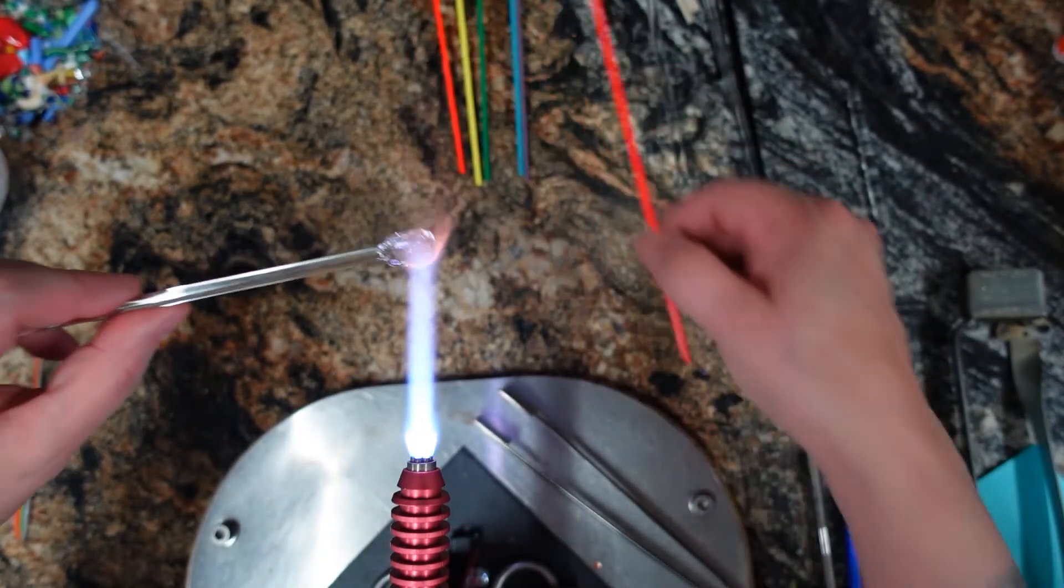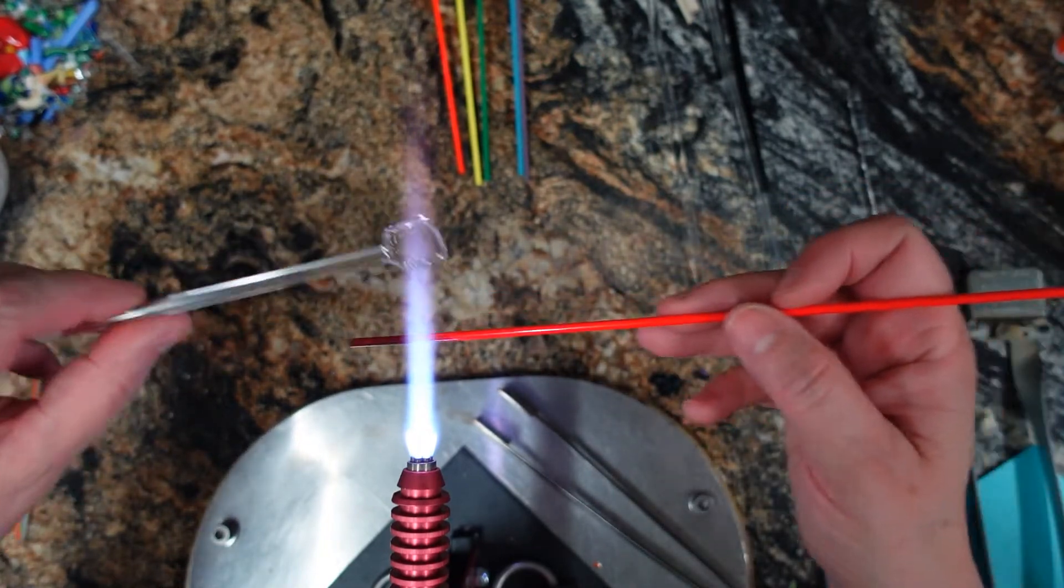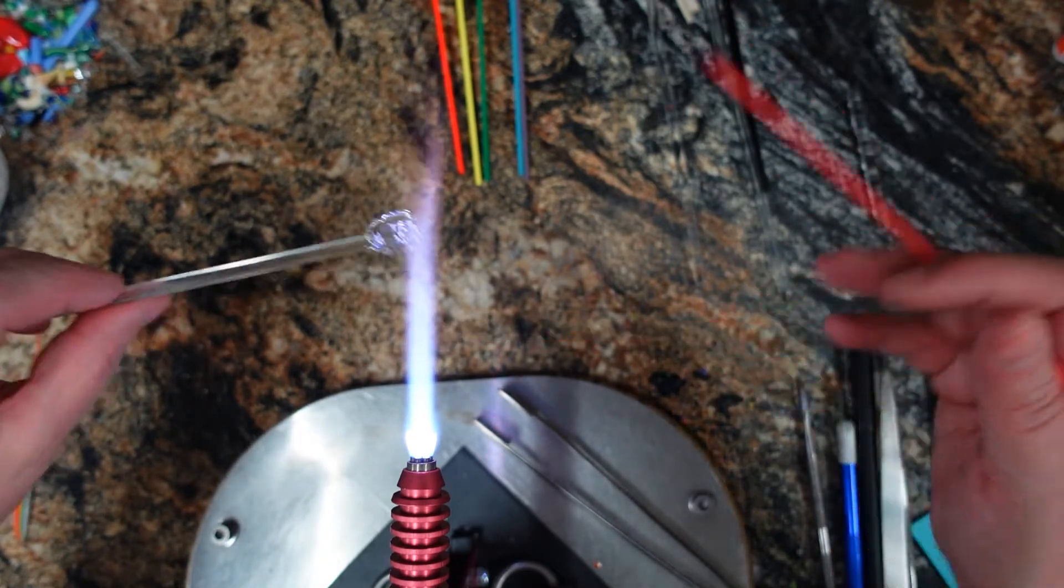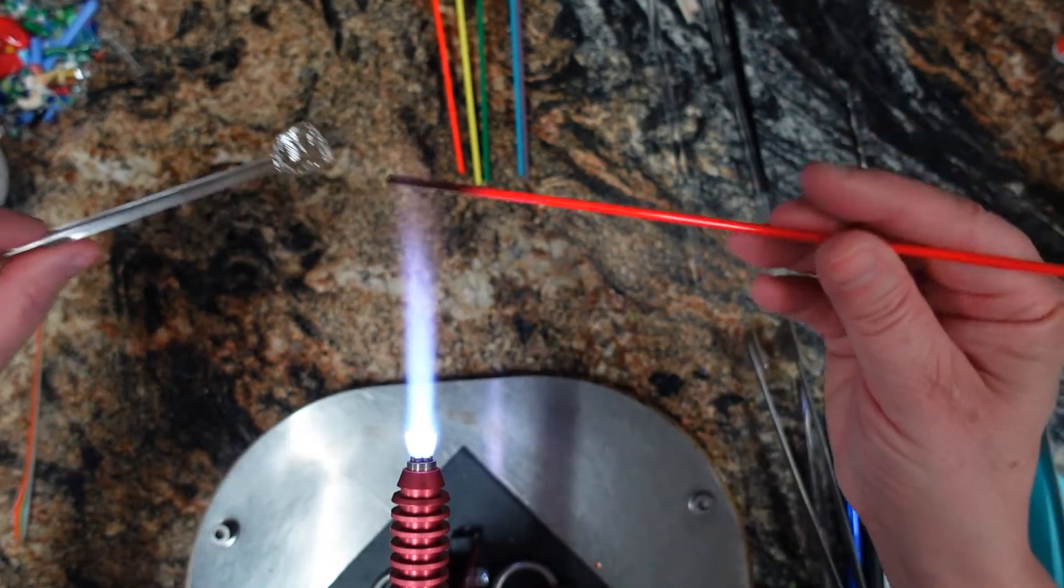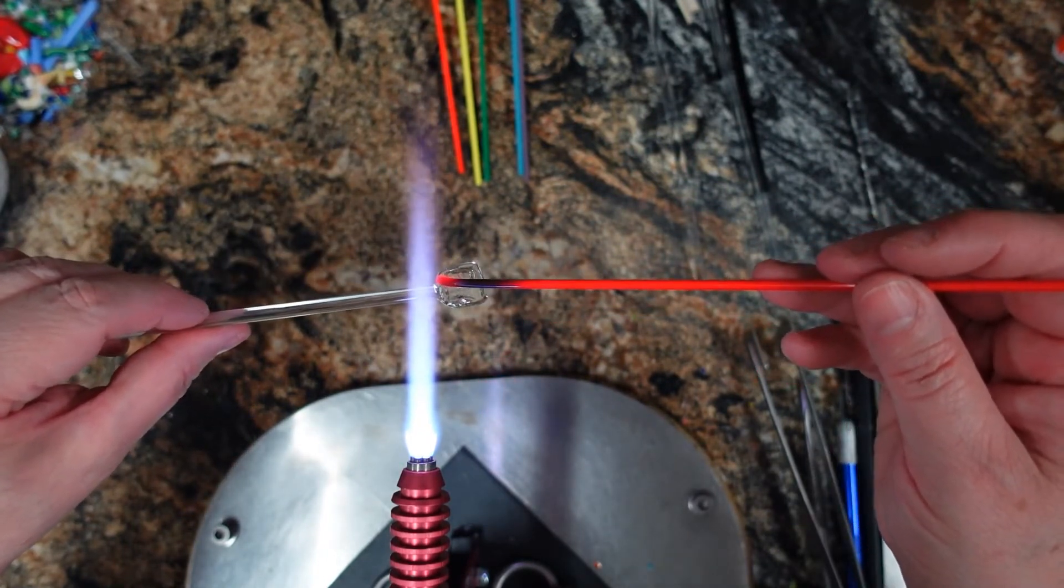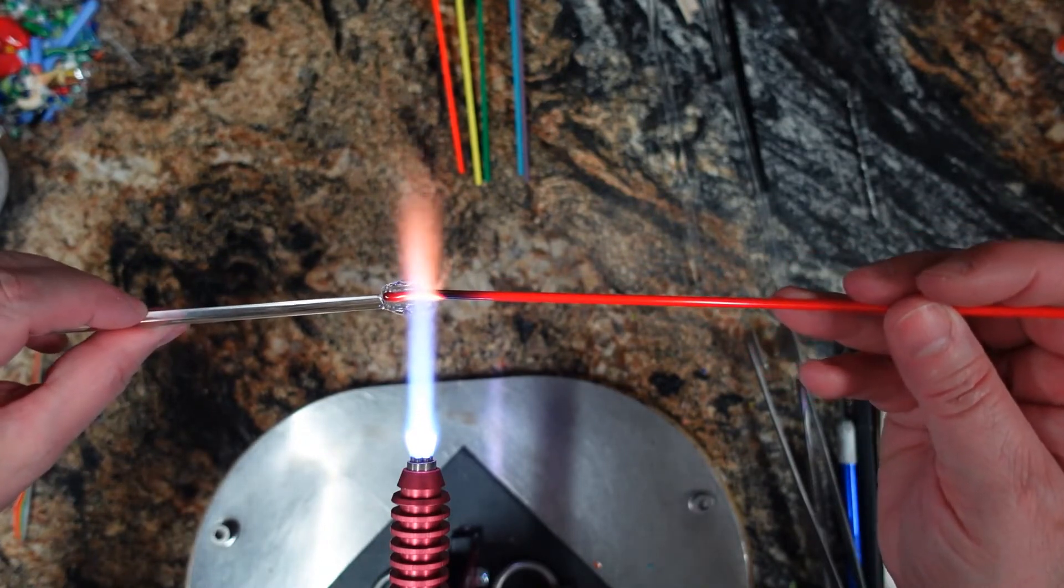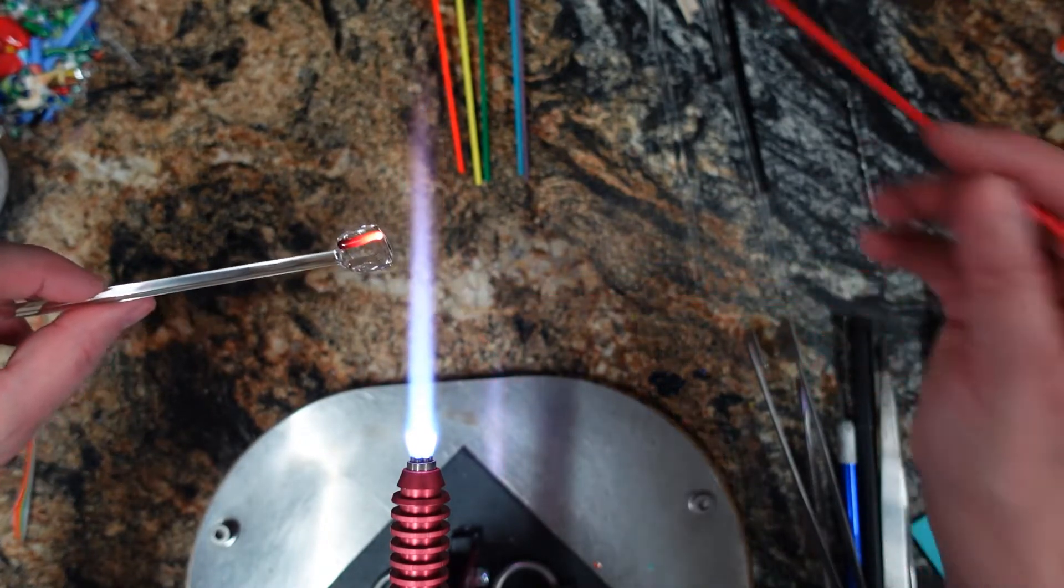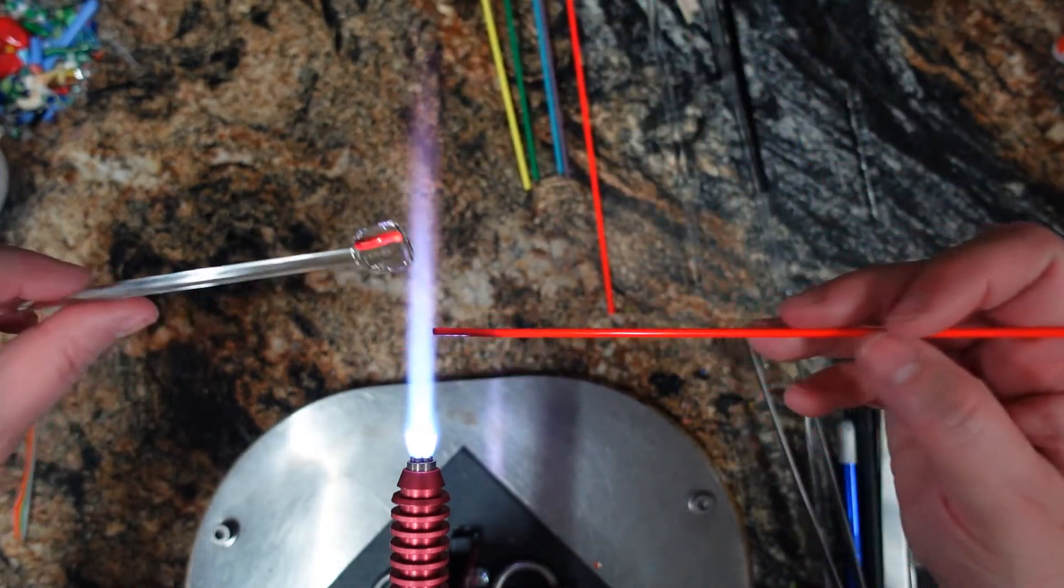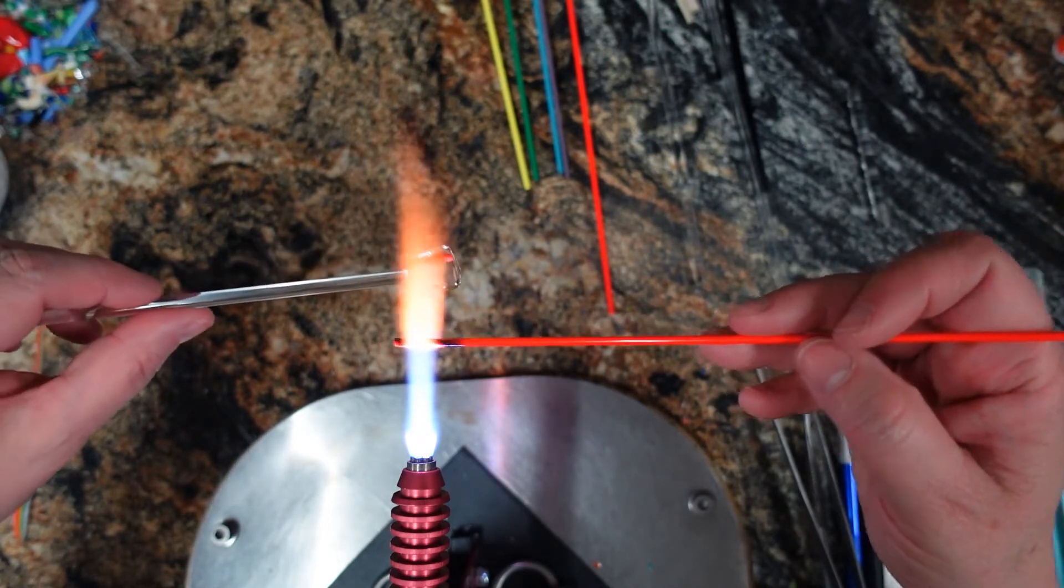Now, we're going to start laying down our stringers. And for some reason, I always have to start with red. Otherwise, I forget the sequence of colors in the rainbow. So, I have my red stringer, and I'm just going to lay down a stripe right at the edge there of my square paddle. And then just pull it off at the tippy tip. Now we're going to go in with orange, because that's what comes next, is orange.